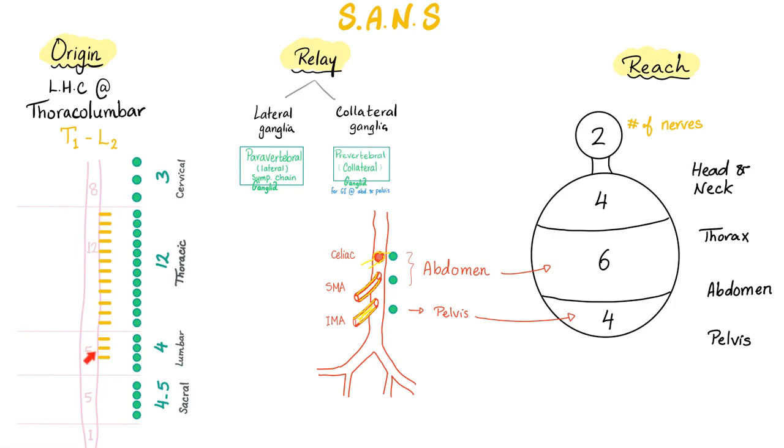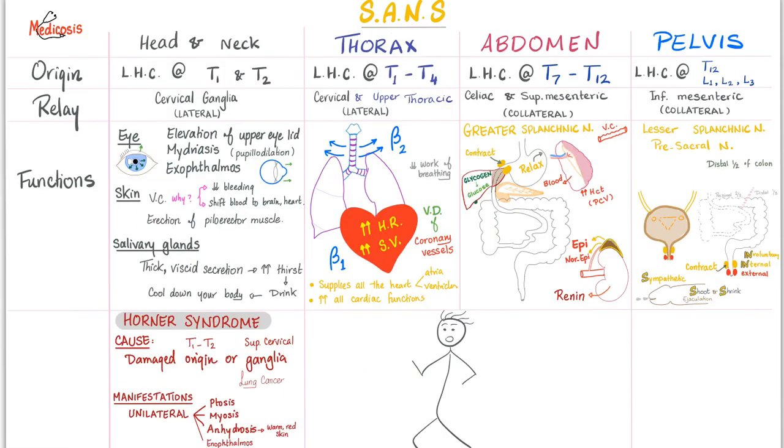Reach. Out of these 15 preganglionic thoracolumbar fibers, two will reach your head and neck. Namely, T1 and T2 because these are the highest. These are the closest to your head and neck. How about thorax? Four. Abdomen? Six. Pelvis? Four. So it's always an even number. The abdomen is the biggest area. It takes six. Thorax and pelvis smaller. Four and four. Head and neck the smallest. Just two. T1 and T2. This is the most important slide in the entire stinking video.